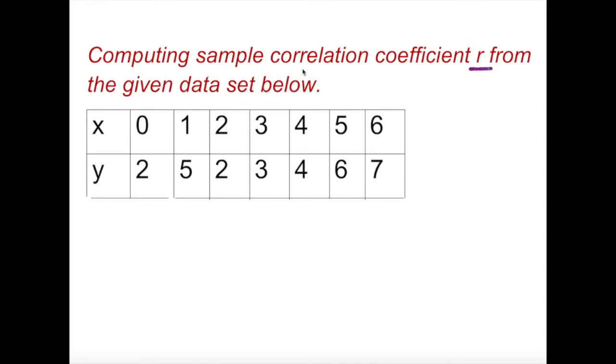How to find sample correlation coefficient r from a given data set. This is a random number, so I assume it's a random number. So there are - this is x independent variable and this is y dependent variable. So it can represent anything. So let's take a look here.